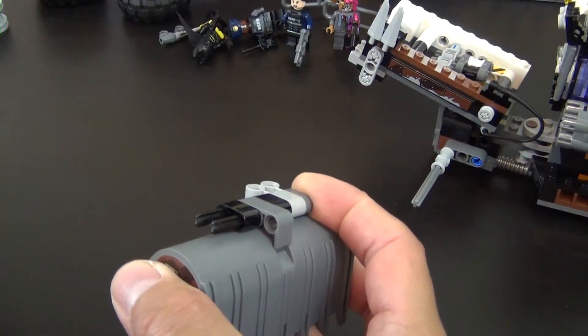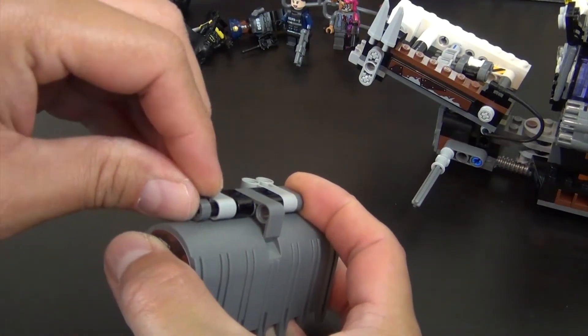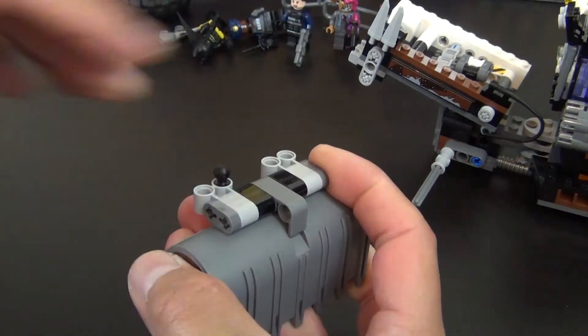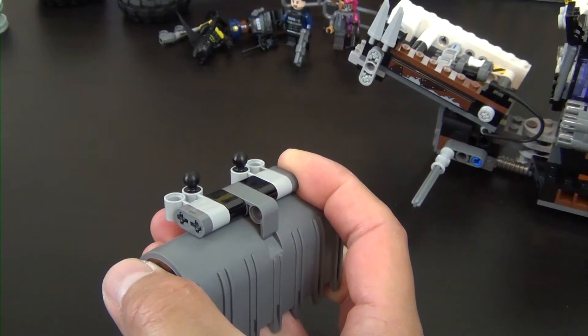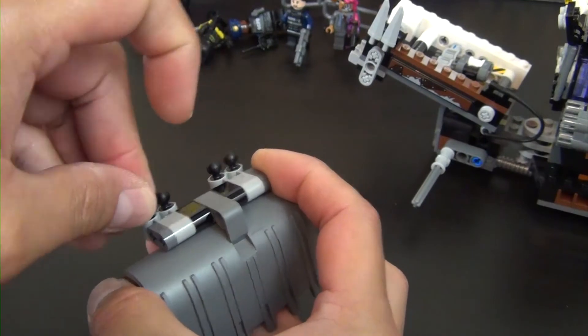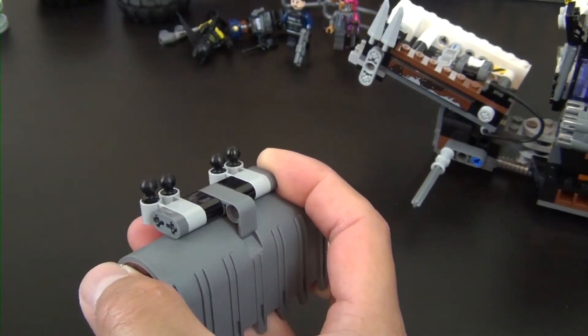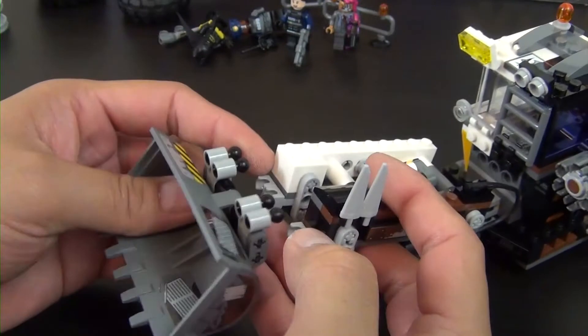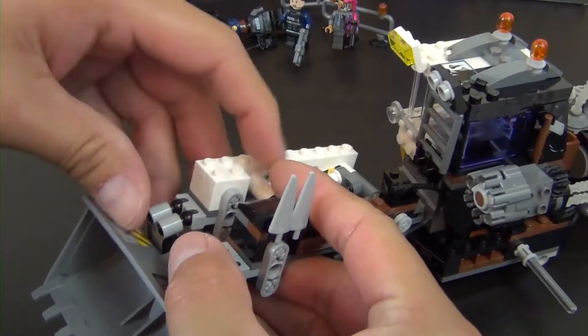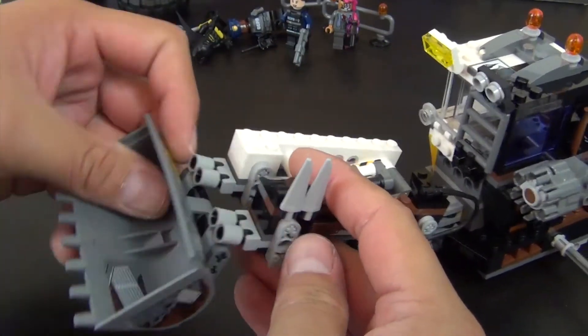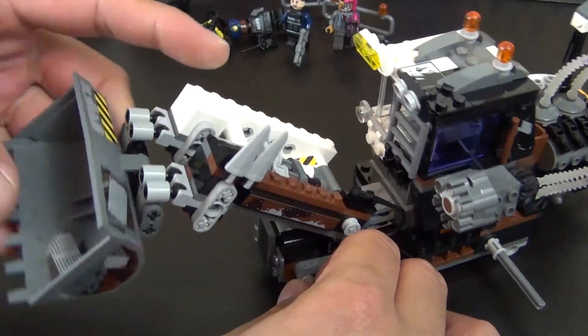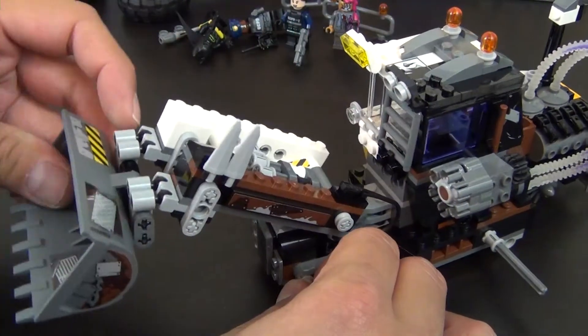All right, slide all these other pieces on. And these will get the technic pins that have the toe ball piece on the end. Bring that over and those toe balls go into those little Mixel joints right there. So that allows that to rotate pretty freely.